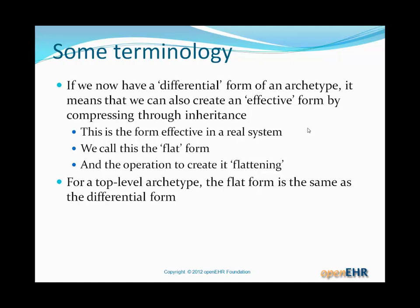We need a little bit of terminology to talk about specialized archetypes before we look at some examples. We now have the differential form of an archetype. It means that we can also create an effective form by compressing through the inheritance lineage. This is the form effective in a real system of any specialized archetype. We call this the flat form — the inheritance-flattened form — and the operation to create it is called flattening. For a top-level archetype, the flat form is the same as the differential form.